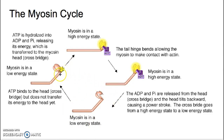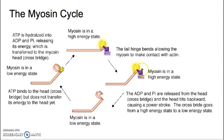ATP binds to the low energy myosin, and that ATP goes through hydrolysis — putting myosin into its high energy state. The high energy myosin bends and grabs onto that actin. The ADP and phosphate are released, triggering the power stroke — when actin and myosin interact, shortening the sarcomere. Then myosin goes back to its low energy state. That is the thick filament.